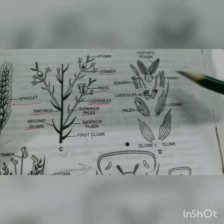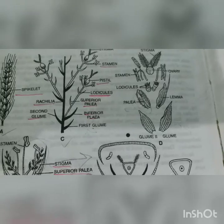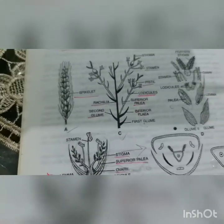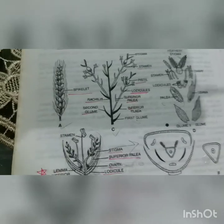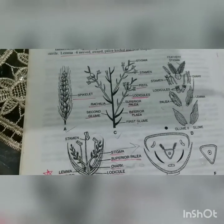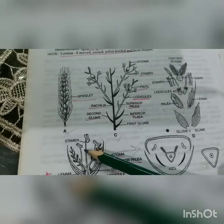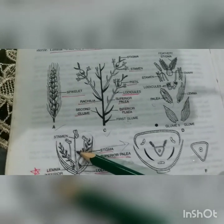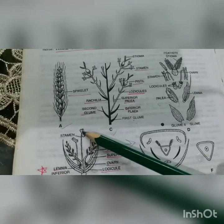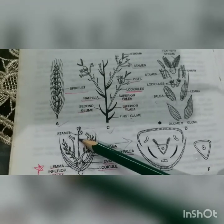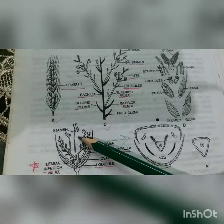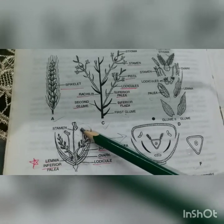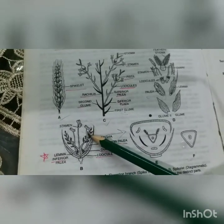The androecium has three stamens, polyandrous, with long and slender filaments. The anthers are dithecous and dorsifixed. The anther lobes are divaricate. Dehiscence is longitudinal and extrorse, and by default, due to the hypogynous condition, the stamens are inferior.